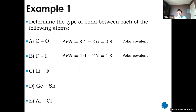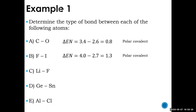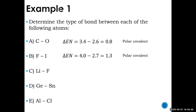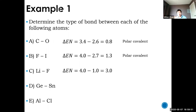What about LiF? Fluorine is 4.0 and lithium is about 1.0, giving a difference of 3. You only need a difference of 1.7 or greater, so obviously this is ionic.